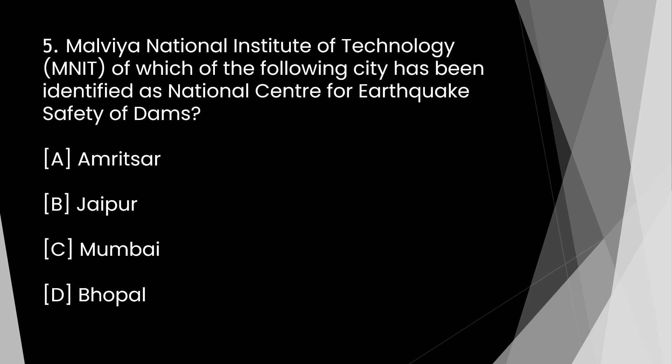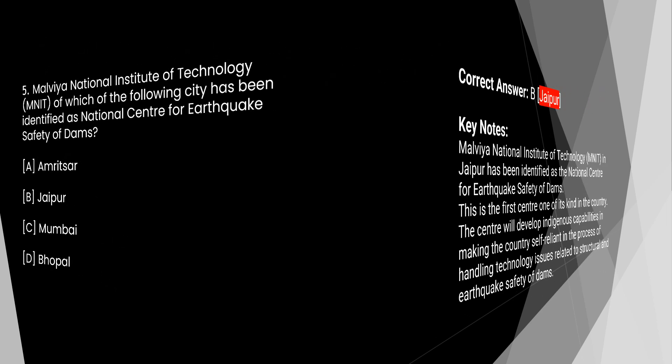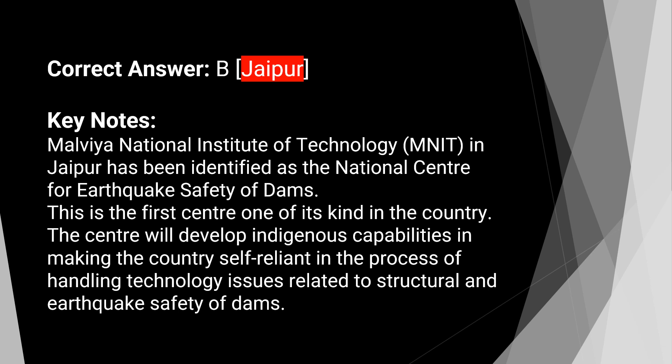Question 5: Malaviya National Institute of Technology (MNIT) of which of the following cities has been identified as the National Center for Earthquake Safety of Dams? Option A: Amritsar. Option B: Jaipur. Option C: Mumbai. Option D: Bhopal. The correct answer is Option B — Jaipur. MNIT Jaipur has been identified as the National Center for Earthquake Safety of Dams, the very first center of this kind in the country. The center will develop indigenous capabilities to make India self-reliant in handling technology issues related to structural and earthquake safety of dams.